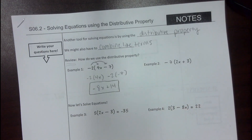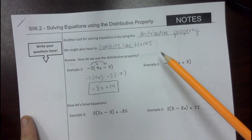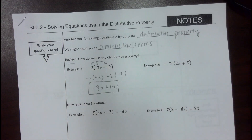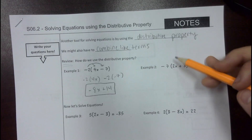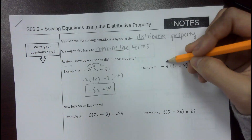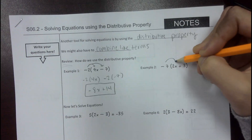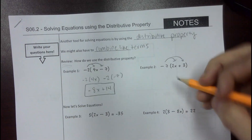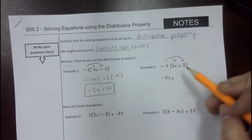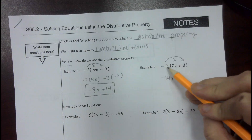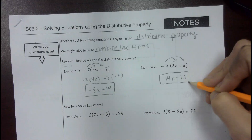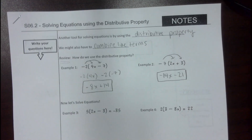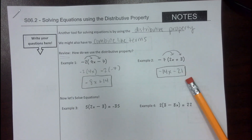Notice we're not solving it — we don't have our equal sign. We're just reviewing the distributive property. For example number 2, we have negative 7. So negative 7 times 2x is negative 14x, and then negative 7 times positive 3 is negative 21. Those two are reviews for the distributive property — make sure you're copying that down.